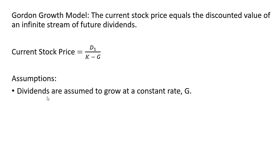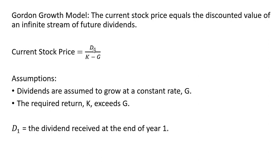Here are some assumptions. Dividends are assumed to grow at a constant rate, G, so G represents the growth rate of dividends and that will be assumed constant, maybe 2%, 3%, 4%, something like that. The required return on the stock is K, and K has to exceed G in order for the denominator to be positive. D subscript 1 represents a dividend, but it is a dividend received at the end of one year.